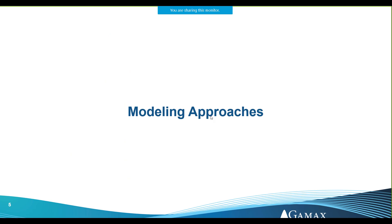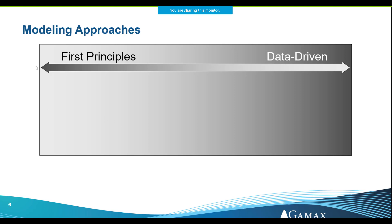Before we have a control system, we need a model of our system. That's why I will start with modeling approaches and how we can get an accurate model. The first is the first-principle approach, which means that we know our system well and are able to build it using differential equations or physical modeling, relying on specific domain knowledge.